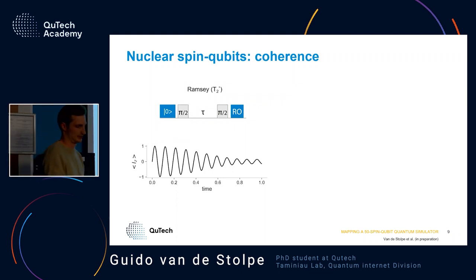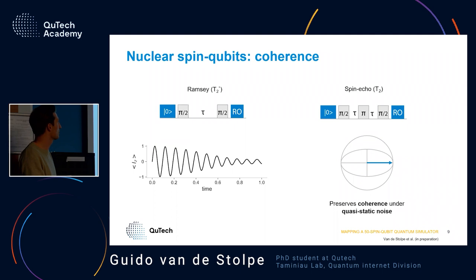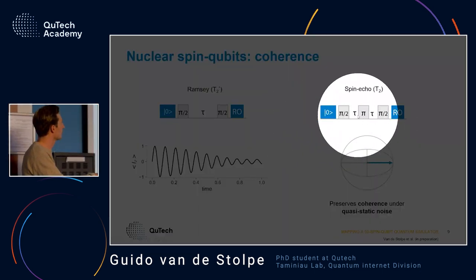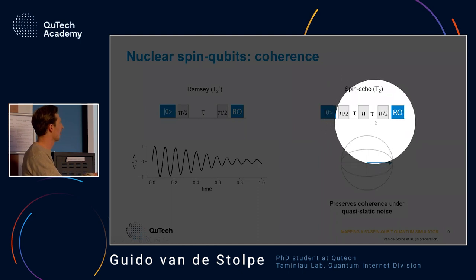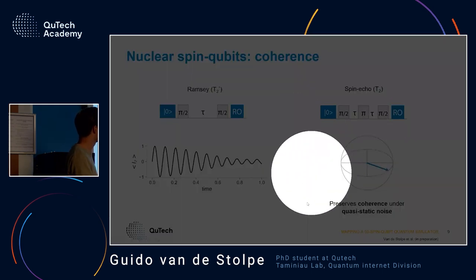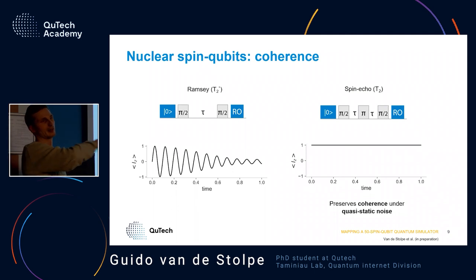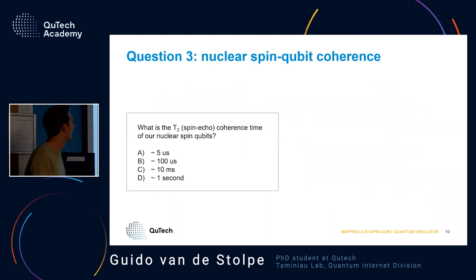We can extend coherence time by applying spin echo. We do the same Ramsey experiment but now we add a pi pulse in the middle, with equal time spacing on both sides. If the nuclear spin picks up some phase in the first half, we do the pi pulse and it picks up the same phase in the second half, exactly canceling out. On the Bloch sphere, the spin picks up phase, we apply the pi pulse, flip to the other side, pick up the same phase again, and return exactly where it started — giving us a flat line.